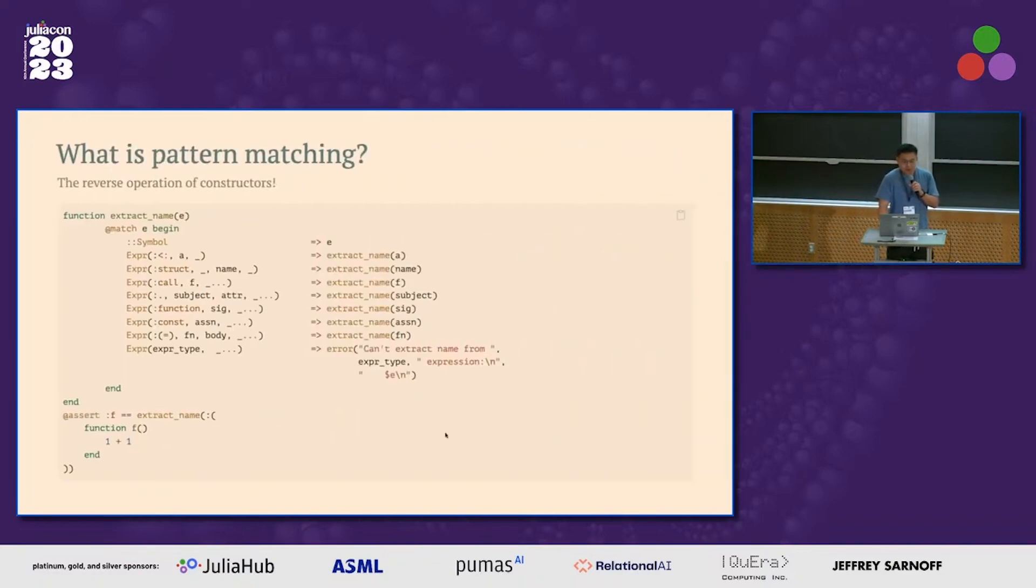And although ML style, so in case you haven't used pattern match before, to give you a little bit of feeling what this is, you can understand this as a reverse operation of constructors. So here's another example of matching Julia expression constructors. So on the left hand side, those are exact same syntax how you construct Julia expression using the constructor.